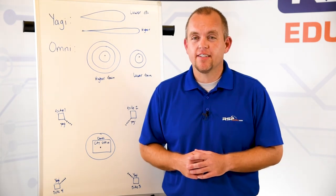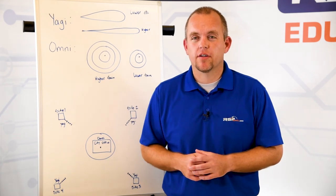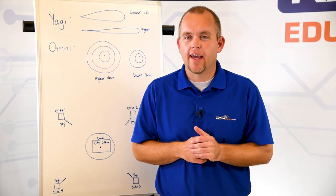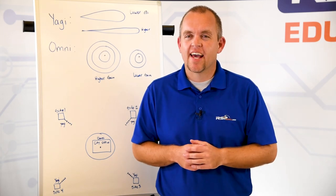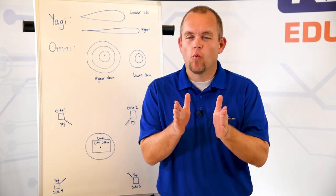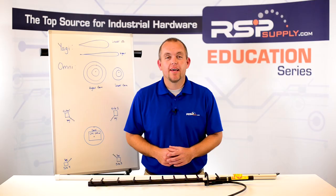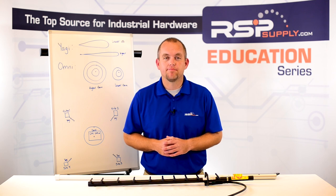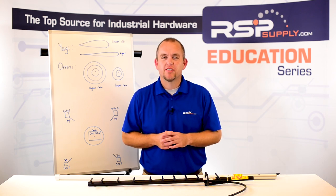Directional antennas can transmit and receive data coming from one specific direction. Yagi antennas have the ability to communicate at much greater distances; however, the antenna pattern is more narrow, which is why it is so important that our aiming is correct. Aiming the antenna correctly is very important for optimal reception. Knowing the actual antenna pattern ensures that we aim the antenna properly.